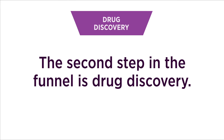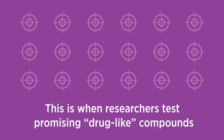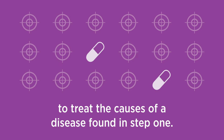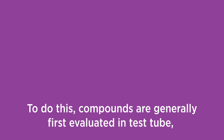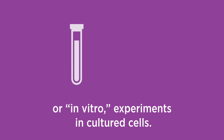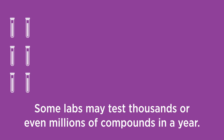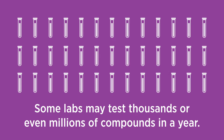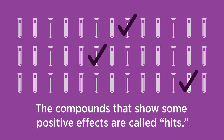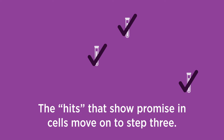The second step in the funnel is Drug Discovery. This is when researchers test promising drug-like compounds to treat the causes of a disease found in Step 1. Compounds are generally first evaluated in test tube or in vitro experiments in cultured cells. Some labs may test thousands or even millions of compounds in a year. The compounds that show some positive effects are called HITs, and the HITs that show promise in cells move on to Step 3.